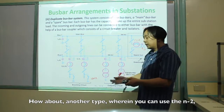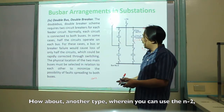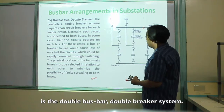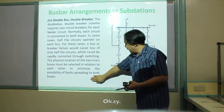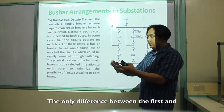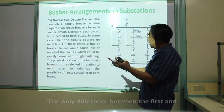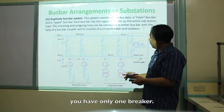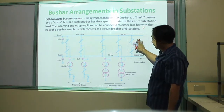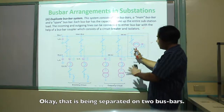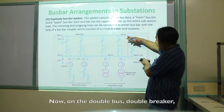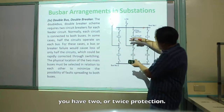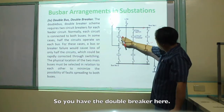Another type for N-2 contingency is the double bus and double breaker system. The difference between the duplicate bus bar and this type is that in the duplicate, you have only one breaker separated across two bus bars. In the double bus and double breaker, you have two or double protection — you have the double breaker here.